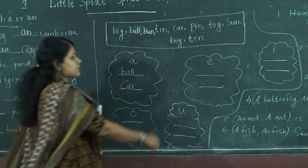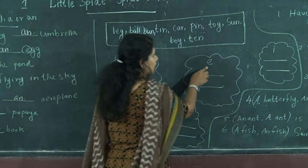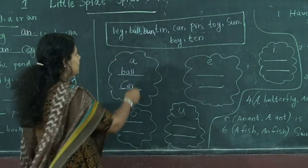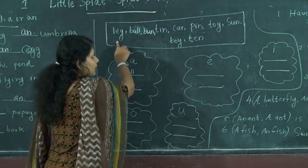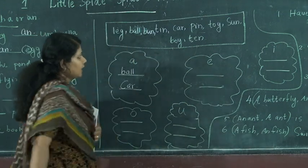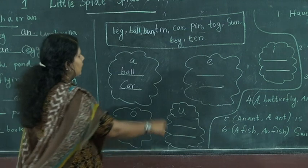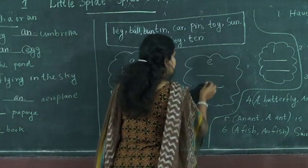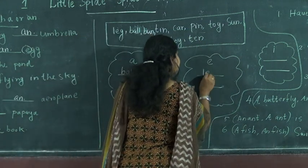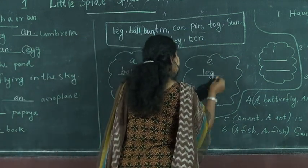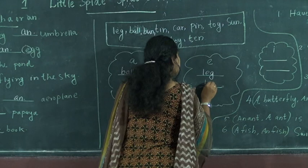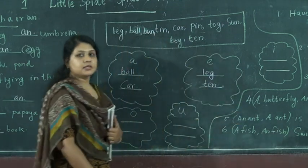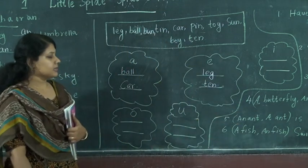The next cloud is E. The words with E are leg and ten. L-E-G, leg, and T-E-N, ten. You can write leg and ten in the E cloud.